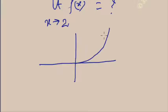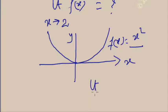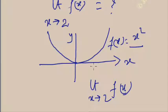To understand this, first you plot the graph of f(x). Plot x and y axes — this is the graph of f(x) = x squared. I want to calculate the value of the limit as x tends to 2 of f(x). The meaning of this is: near x = 2, what are the values of y?